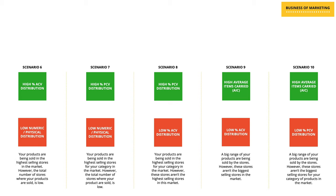In scenario ten, we have a situation where there is very high average items carried but along with that low percentage PCV distribution. This means that even though the stores carrying your products are stocking a very wide range of what you have, sadly these aren't the highest selling stores for your category. Therefore, what you need to focus on is increasing your distribution in the stores which are important for your category, rather than negotiating with retailers to increase the range of products they carry. Your focus needs to be on increasing your width of distribution because the depth is doing fine.